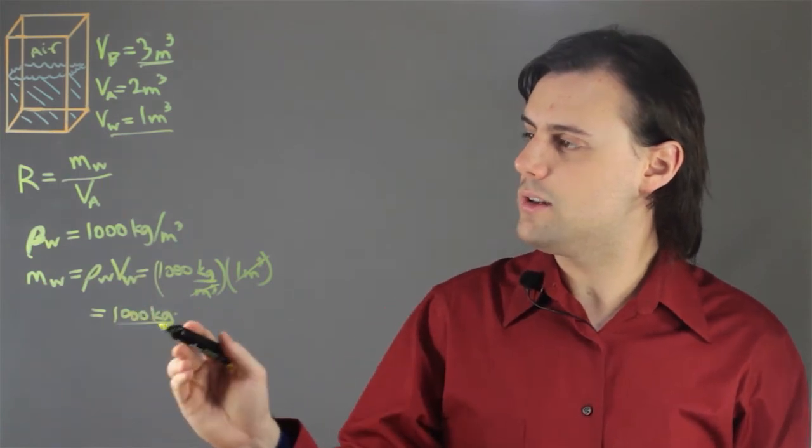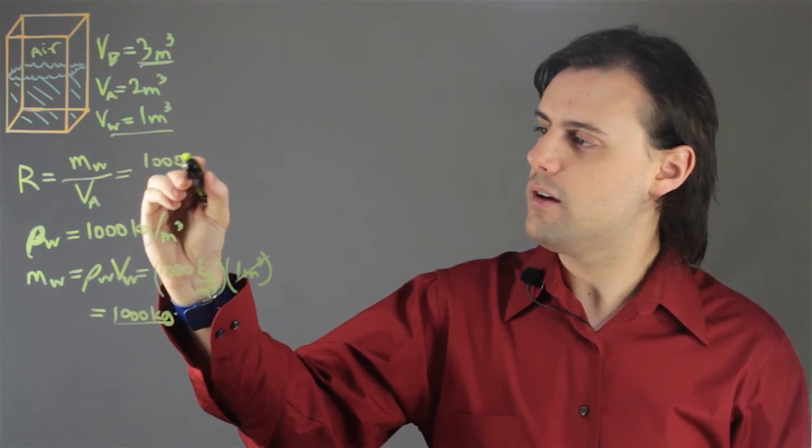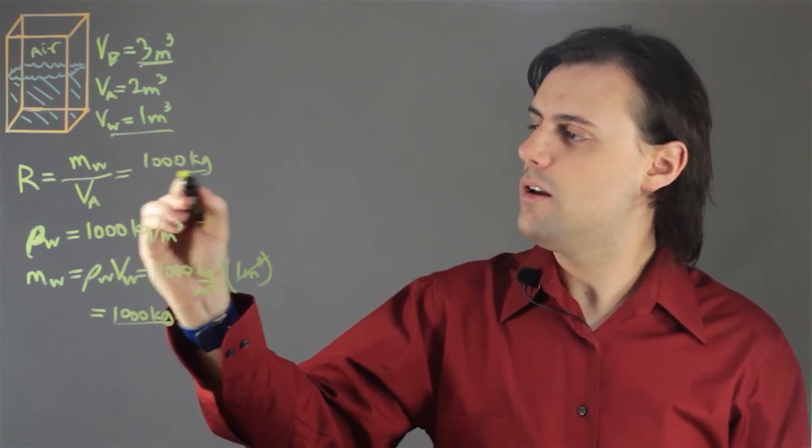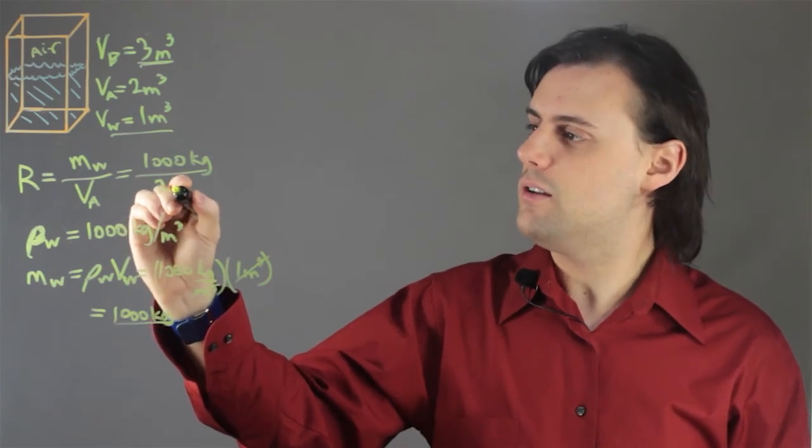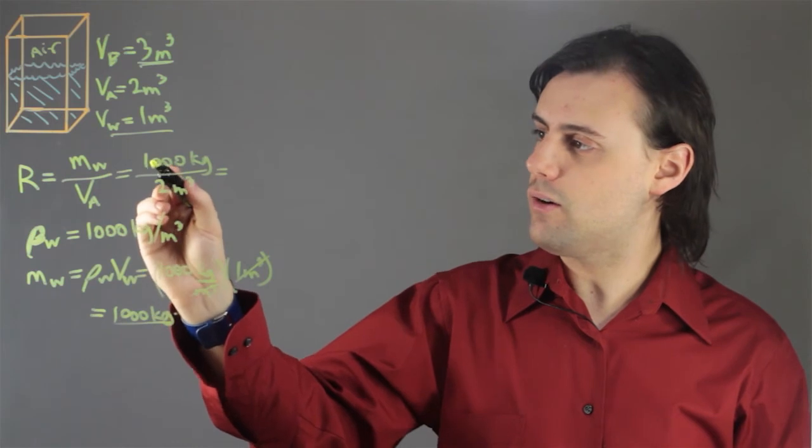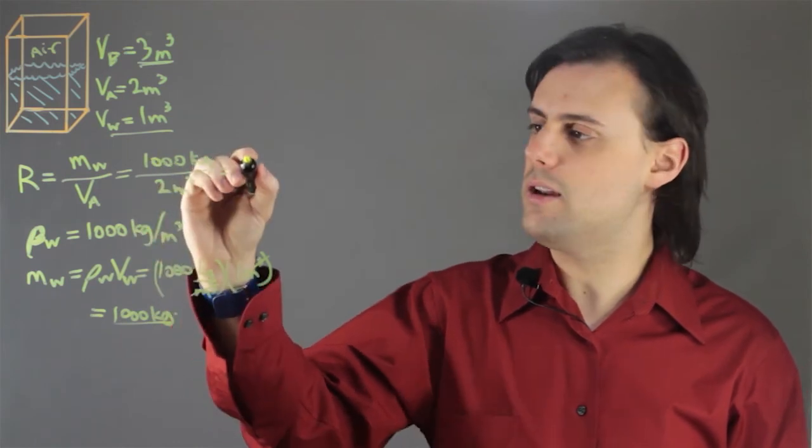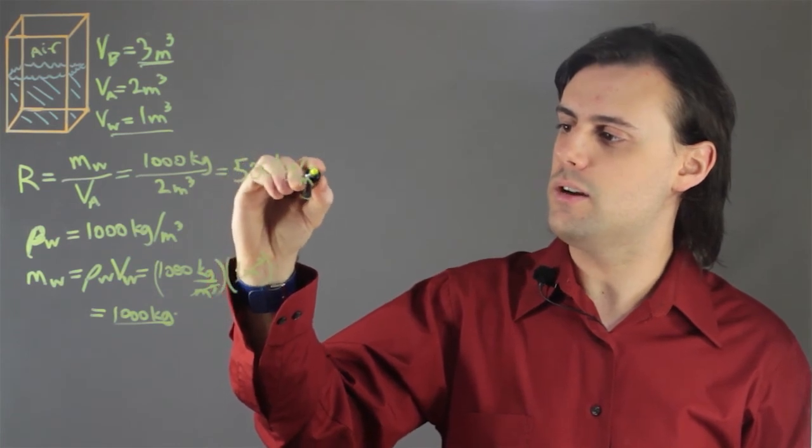So now we simply divide this mass that we just determined, 1,000 kilograms, by the volume of air, which in this case is 2 meters cubed. And when we divide 1,000 by 2, we end up with 500 kilograms per meters cubed.